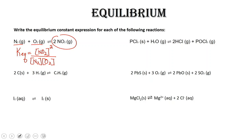Let's do this one: I2 aqueous forms I2 solid. In this reaction, we have aqueous and solid. Remember that K equilibrium is always going to be equal to the concentration of the products over the reactants. Since we cannot use the concentration of our product because it is a solid, we put the number 1 as a placeholder, and we have the concentration of I2 aqueous in the denominator.